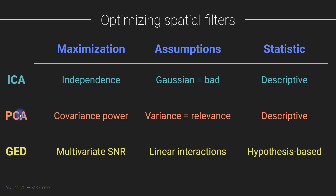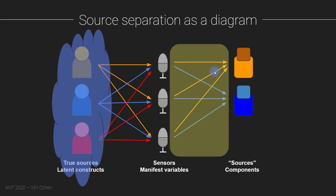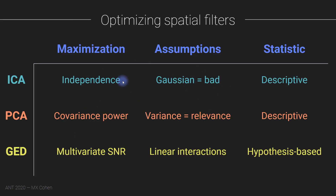These methods have similar goals but different maximization criteria. PCA, ICA, and GED are basically different ways of making assumptions about the sources in order to devise the channel weights. The arrows — the weightings — will be different for different algorithms because different algorithms make different assumptions about what's happening in the data. By way of introduction to PCA and GED, I want to start by talking about covariance matrices, because many spatial filters are based on covariance matrices.